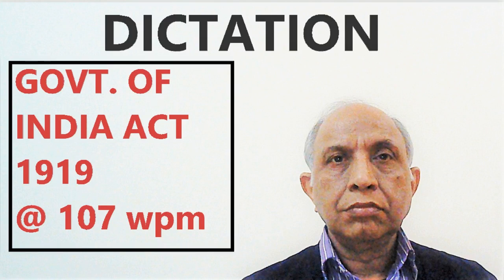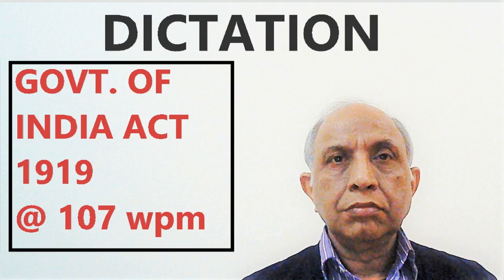Via the Government of India Act 1919, a bicameral legislature was set up at the centre with two houses: the Legislative Assembly and the Council of State. This was a primitive model of India's Lok Sabha and Rajya Sabha. The Legislative Assembly was the lower house with three years as its tenure. It was made of 145 members, of which 41 were nominated and 104 were elected. The 41 nominated members included 26 officials and 15 non-officials. The Governor-General was authorized to make nominations from Anglo-Indians, Indian Christians, and Labour to the Legislative Assembly to safeguard their interests.